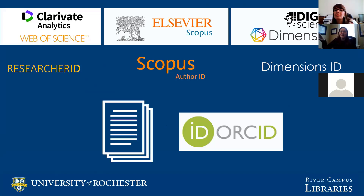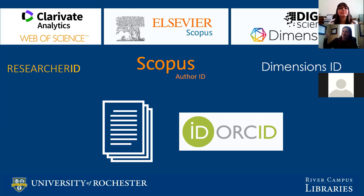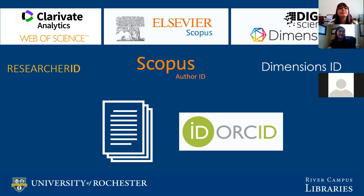When looking at these databases, where do they get their data? First, it is what is submitted on the paper. Did you put the name you want to be called correctly? Did you put your correct institution — University of Rochester? You'd be surprised how many older papers have errors, which makes it harder for the system to associate them with you. Your ORCID data can also feed all these systems.